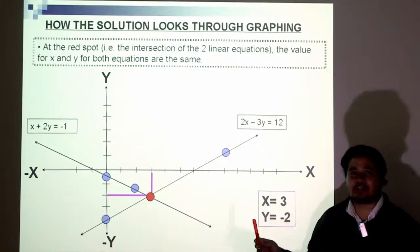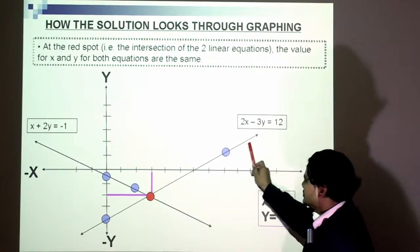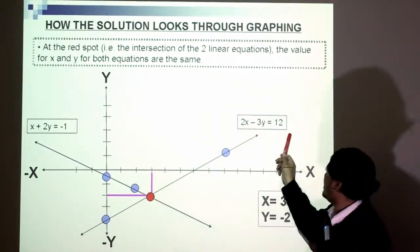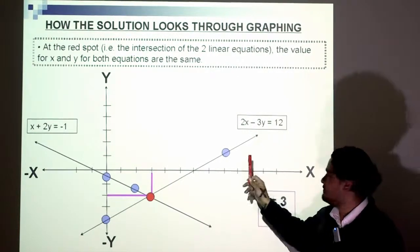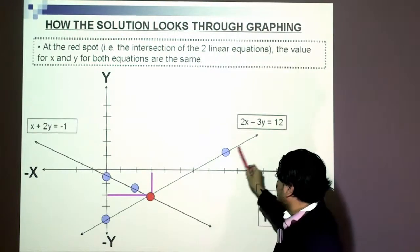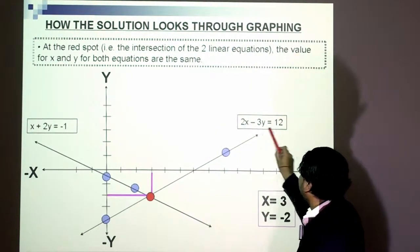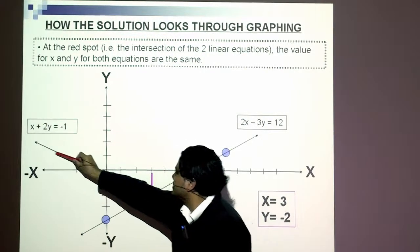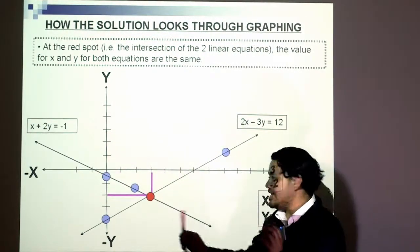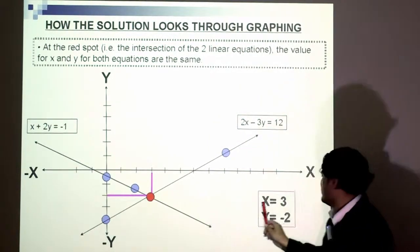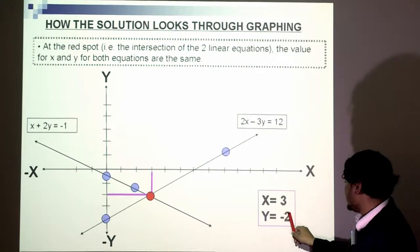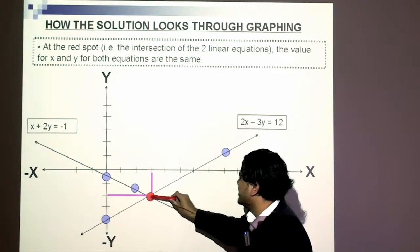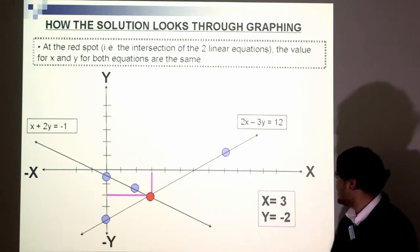So our solution through substituting, how does it look on a graph? Here was one of our equations and our other equation. Equation 1: x + 2y = -1. And our equation 2: 2x - 3y = 12. So we have our two linear equations. We can find out what's the line for this, what's the straight line. Remember, the graph of a linear equation is a straight line. That is equal to that line, that is equal to that line. And where they intersect, where they meet, that is our solution. That was our answer. And remember we found that x equals 3 and y equals negative 2. So this is 3, and negative 2 going down. That's another way to look at the answer.